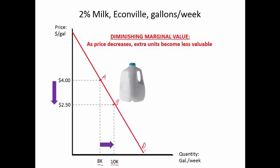Now consider the opposite case where price decreases from $4 to $2.50 and quantity goes up from 8,000 to 10,000 gallons per week. What happened to demand as the price decreased? Nothing — the demand curve D1 is still there. What changed is the quantity, going from 8,000 to 10,000. We moved from point A on this demand curve to point B. The technical term for this is diminishing marginal value — as price decreases, extra units become less and less valuable.